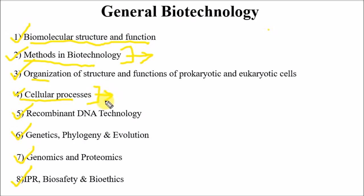The most important cell signaling pathway is the GPCR pathway — please read it carefully. In cellular processes there is also immunology: innate immunity and adaptive immunity. The very important chapters in immunology are the activation of B cells, activation of T cells, and hybridoma technology. Please also read about the various vaccines used.